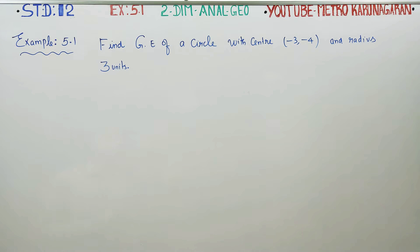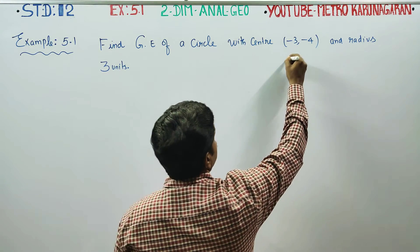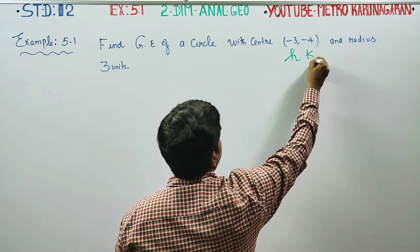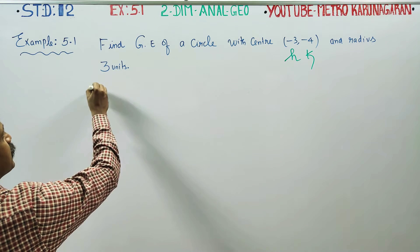Find the general equation of the circle with center (-3, -4) and radius 3 units. This is H and K. Radius is R.